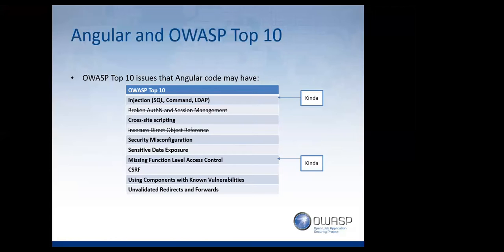Missing functional-level access control is a server-side problem, but AngularJS has ng-show and ng-hide used to show and hide parts of the application — that becomes a problem with client-side trust. CSRF is more of a server-side interaction but AngularJS does offer some help with that. Using components with known vulnerabilities is true because we integrate third-party libraries that may contain vulnerabilities. Unvalidated redirects and forwards is also a problem because of the $location service in AngularJS, which allows manipulation of location.href.